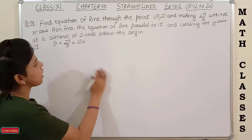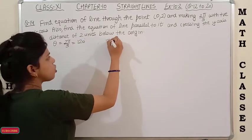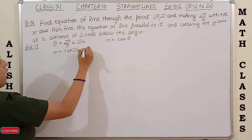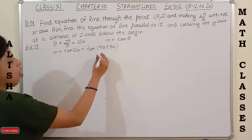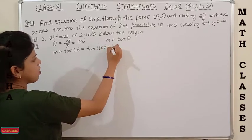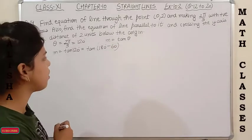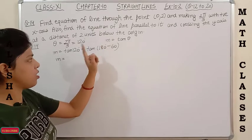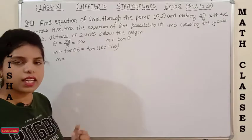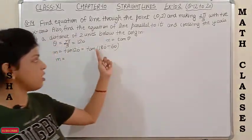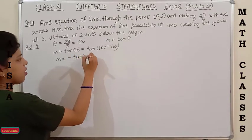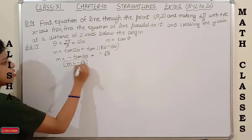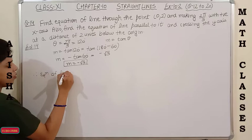m = tan 120° = tan(180° − 60°). Since 120° lies in the second quadrant where tan is negative, m = −tan 60° = −√3.